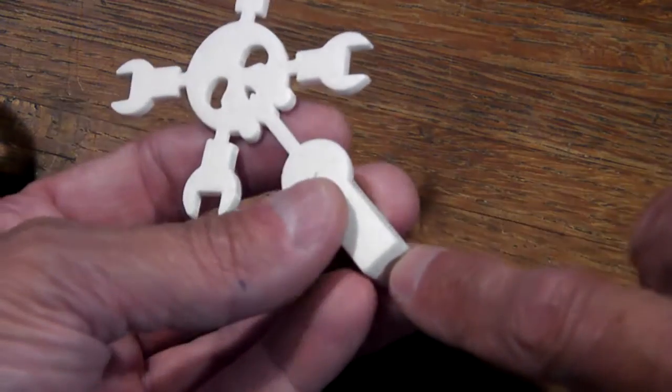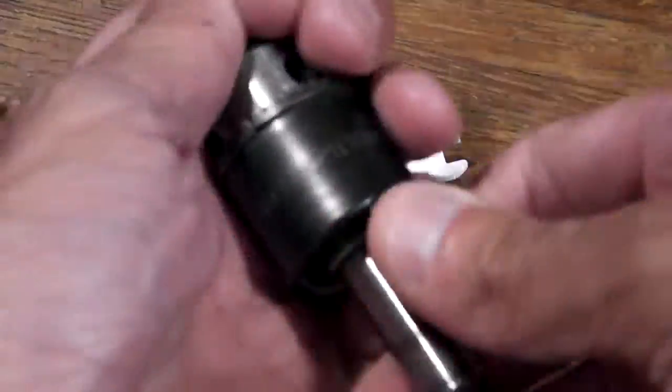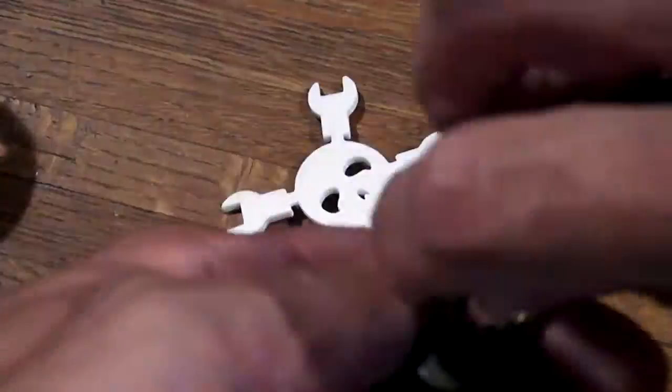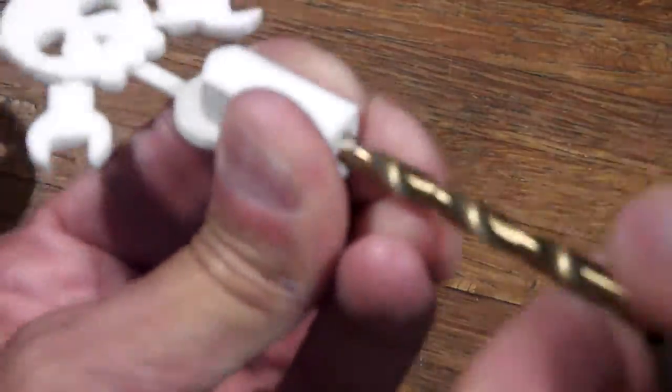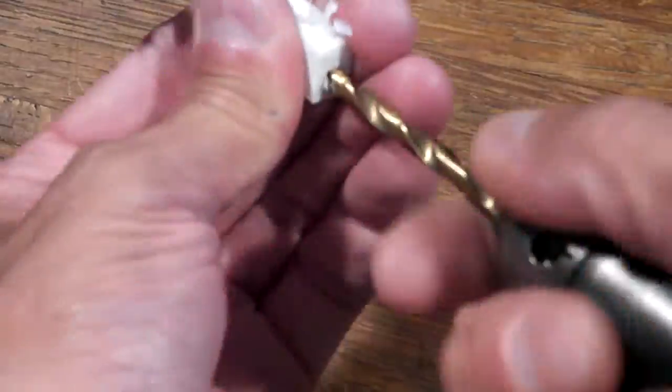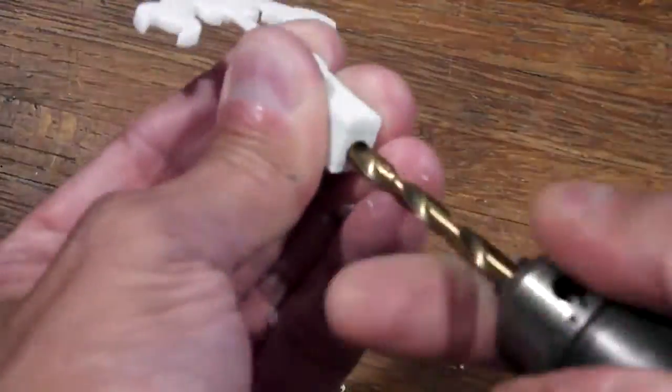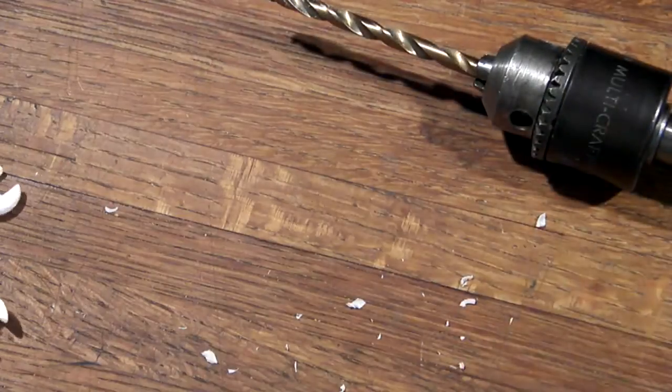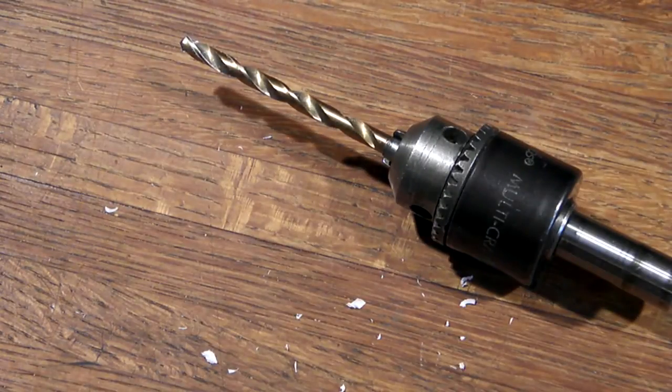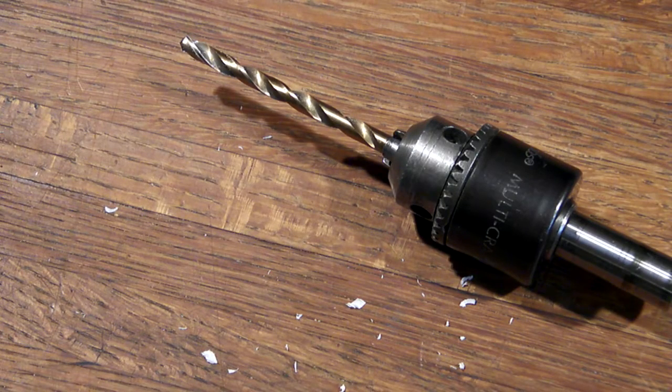I'm going to thread the bottom of this hole and then screw some threaded rod into there. First I'm going to clean up that hole. I like to have a few of these chucks from old cordless drills laying around when I want to hand work something. Put a drill bit in there and just do what I need to do without grabbing a drill at all.